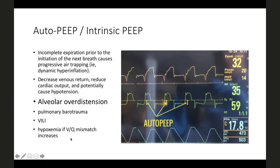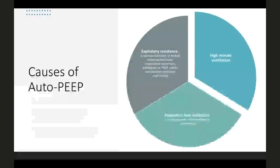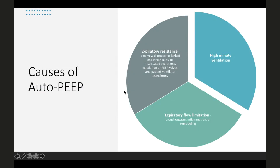Dynamic hyperinflation compresses pulmonary capillaries, worsening V/Q mismatch and causing hypoxia. Avoid auto-PEEP by giving better expiratory time. Higher minute ventilation may be the culprit — it is not high tidal volume or high rate alone, but rather insufficient expiratory time that matters. Causes of auto-PEEP include high minute ventilation, expiratory flow limitation from bronchospasm, inflammation, remodeling, or expiratory resistance from a narrow or kinked endotracheal tube, inspissated secretions, or patient-ventilator asynchrony.